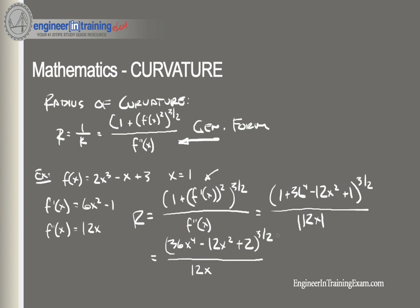Now all we need to do is plug in our value of x equals 1 into our equation, and we find that R is equal to 11.05. So our radius of curvature at x equals 1 of the curve defined by the function 2x cubed minus x plus 3 is equal to 11.05.